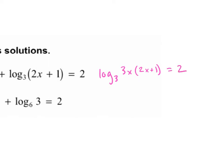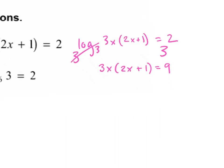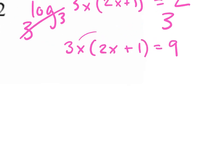Now we can get rid of the log base 3. We make the big base 3, and it cancels. So we're left with 3x times (2x plus 1) equals 3 to the second power. What's 3 to the second power? 9. When you distribute, you get 6x squared plus 3x minus 9, equal to 0.